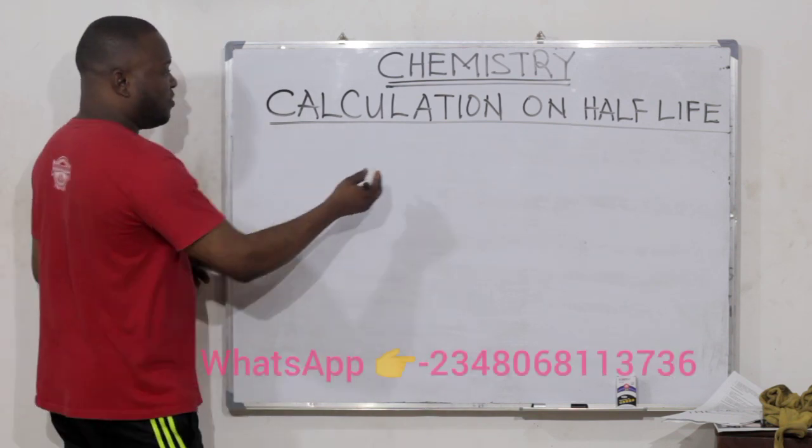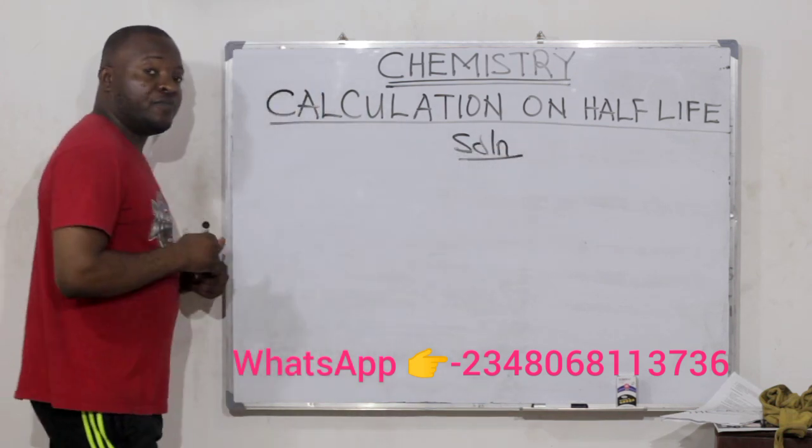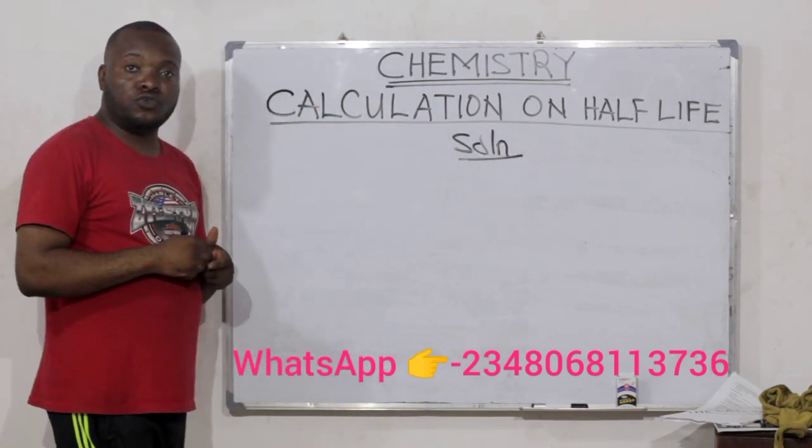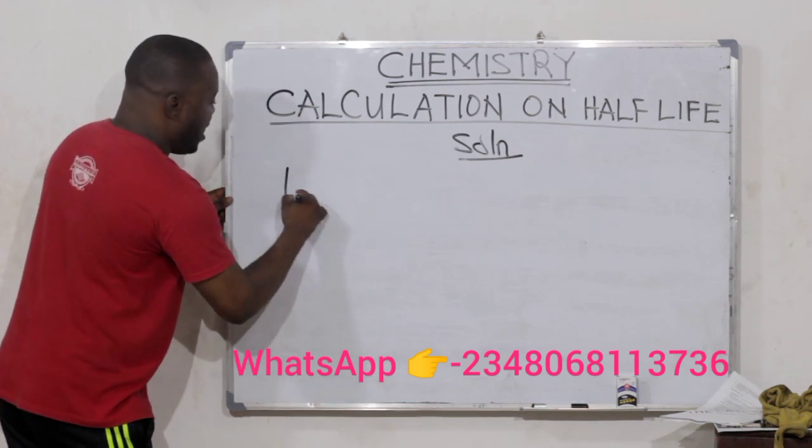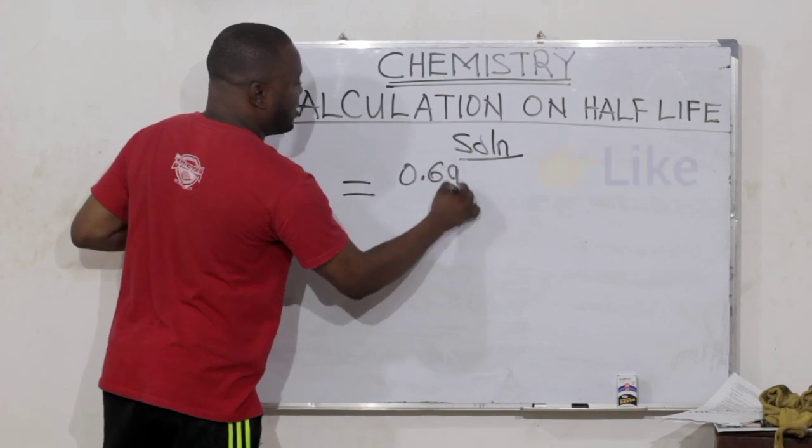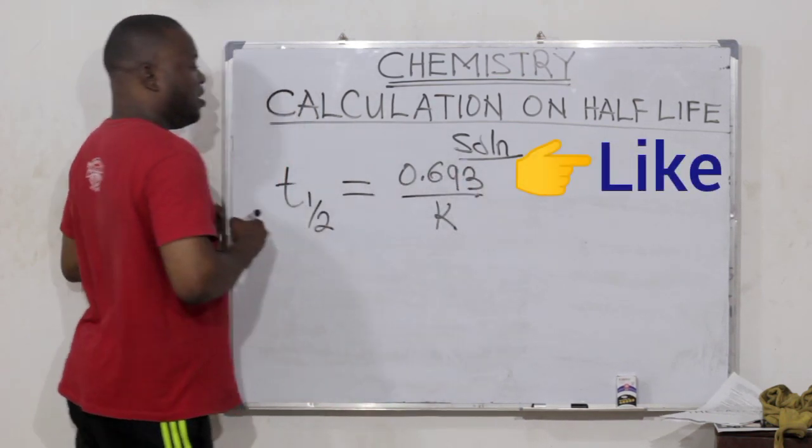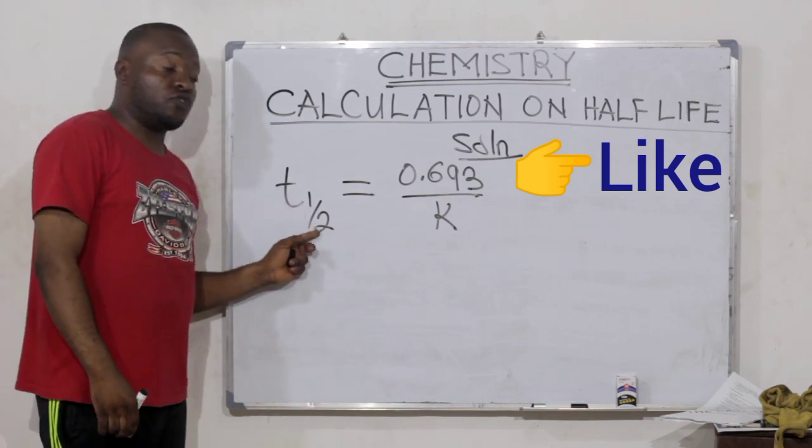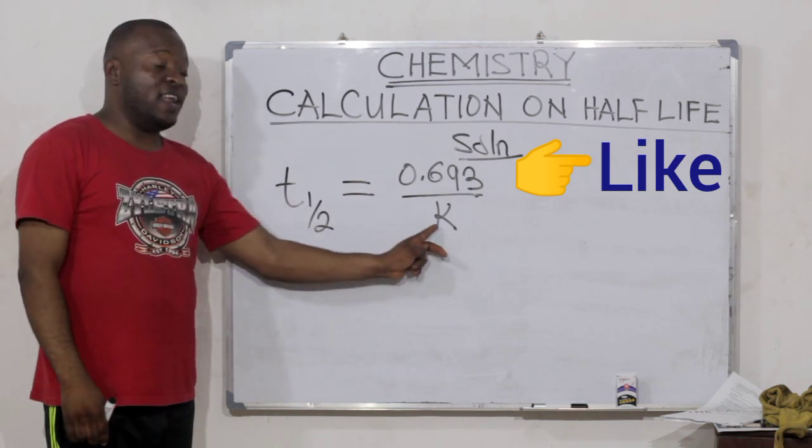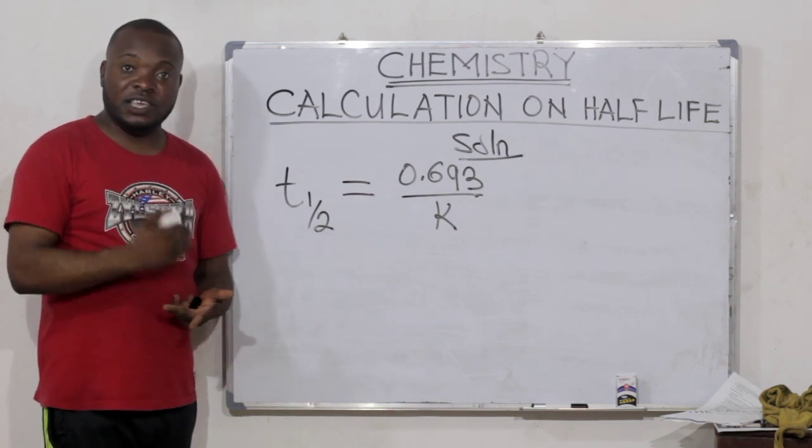First we'll start with the solution. Remember, in the previous video, I told you that half-life is equal to 0.693 divided by k. T-half is called half-life, while k here is called decay constant.